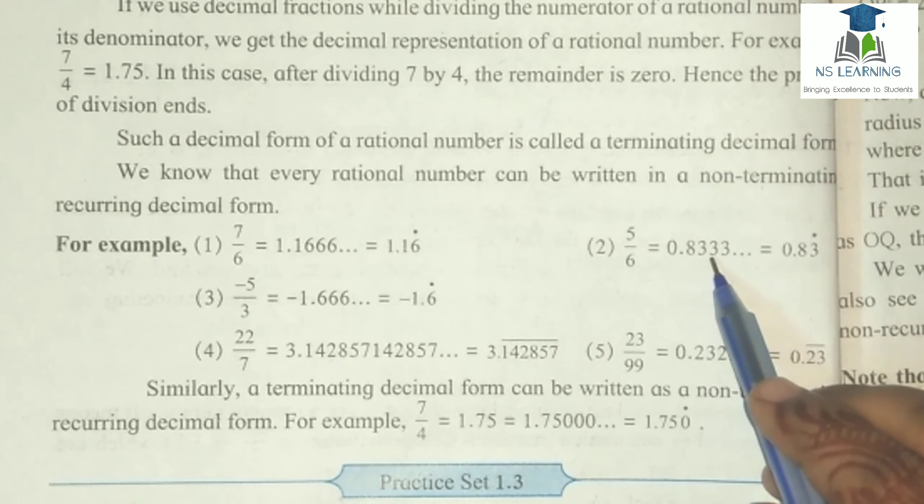Practice set number 1.3: write the following rational numbers in decimal form. Yeh rational numbers ko hum decimal form mein convert karenge. Question number 1: 9 upon 37. Jab hum divide karte hain to neeche wala term yahan likhna hai, aur divisor yahan par. Maine 37 ka table already bana liya hai taaki aapko easily samajh aaye.